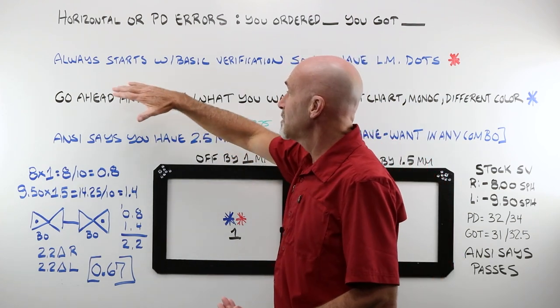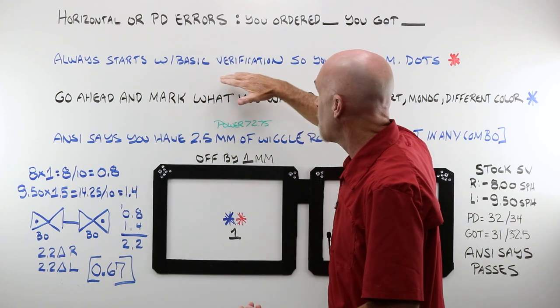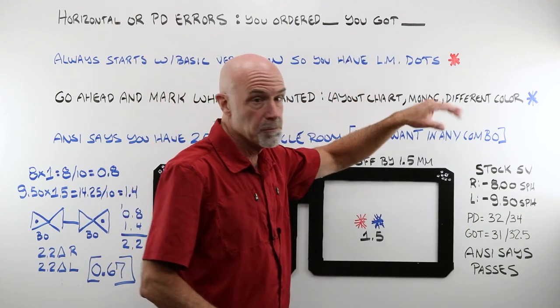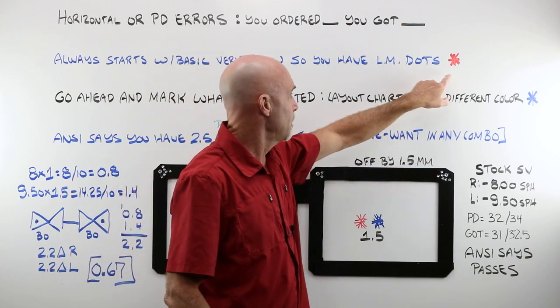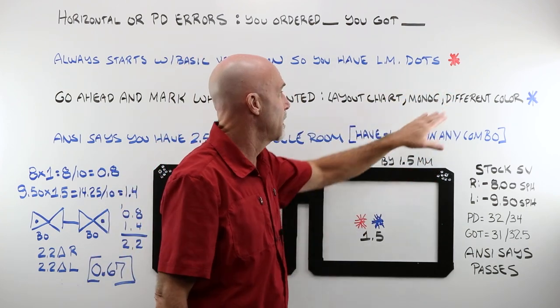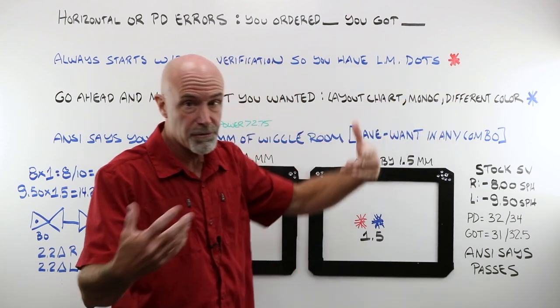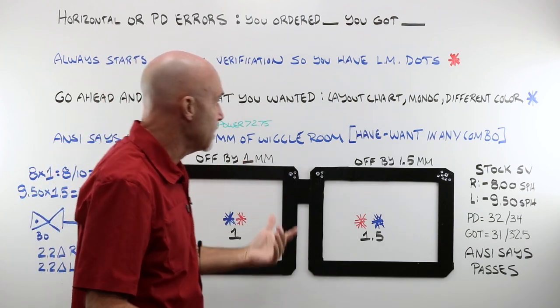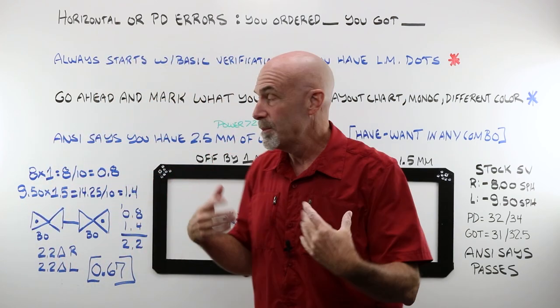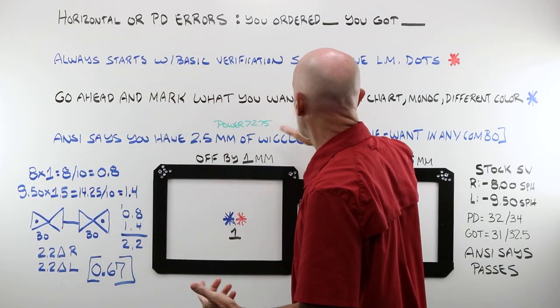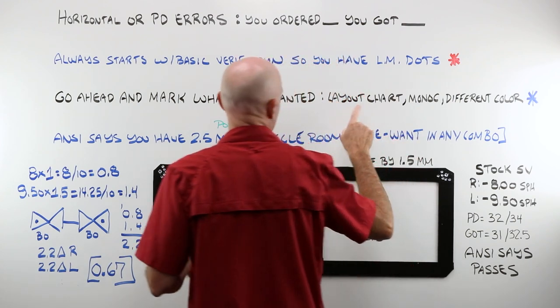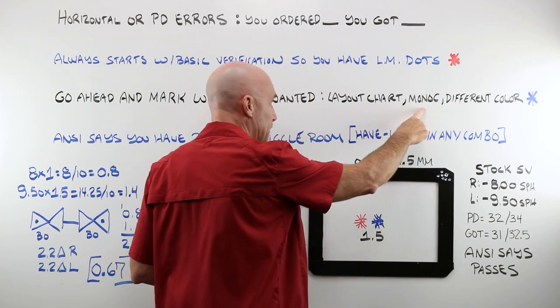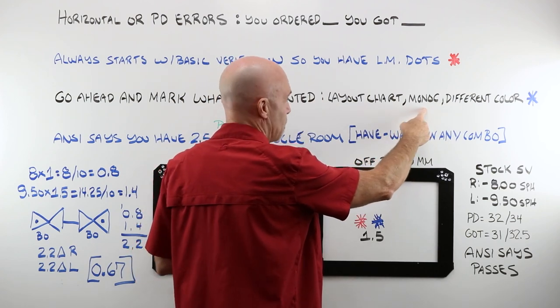Now, as I said a couple of minutes ago, you always start with basic verification. So you're always going to have your lens meter dots. Everything's targeted up perfectly in the lens meter. You tap it. And we're going to use a red asterisk for that marking. Now, if you haven't done so already, you think there's a problem, you know there's a problem, go ahead and mark what you wanted. Use a layout chart. Do monocular PDs. If you have 64, go 32, 32.